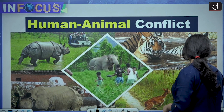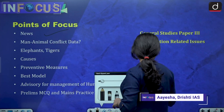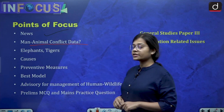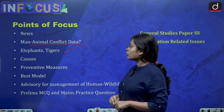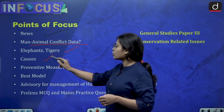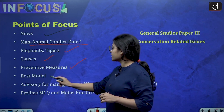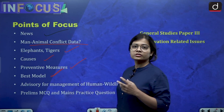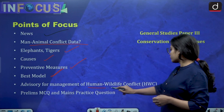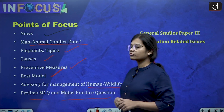Let's see what we will be covering today. First, we will look at the news, then the important points and human-animal conflict data, then data related to the death of elephants, tigers and humans, then the causes of human-wildlife conflict, preventive measures, best practice models or case studies, advisory for management of human-wildlife conflict, and finally our prelims MCQ and mains practice question.